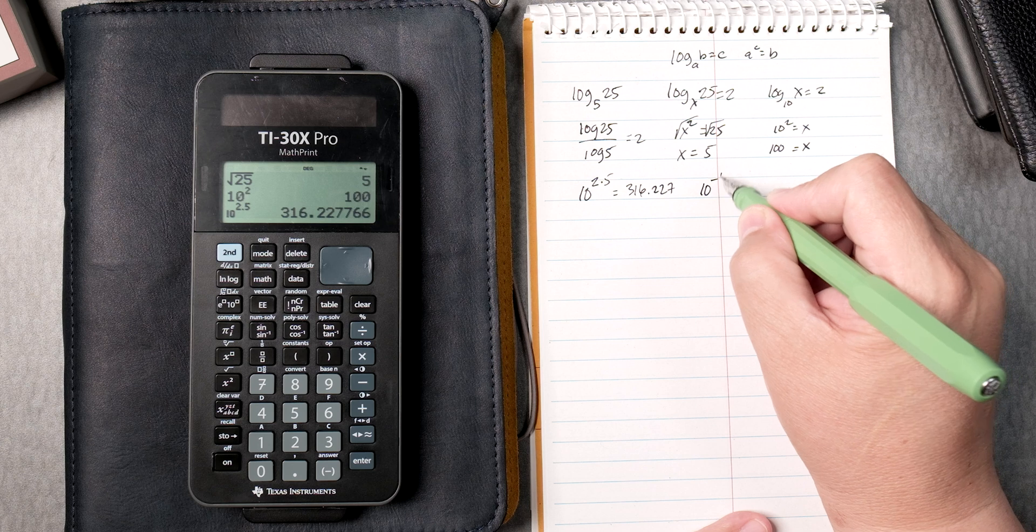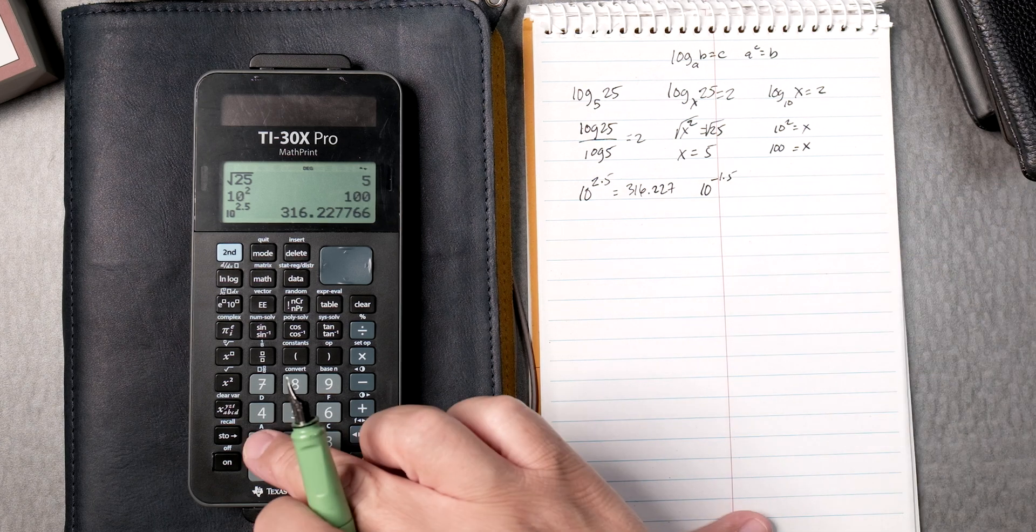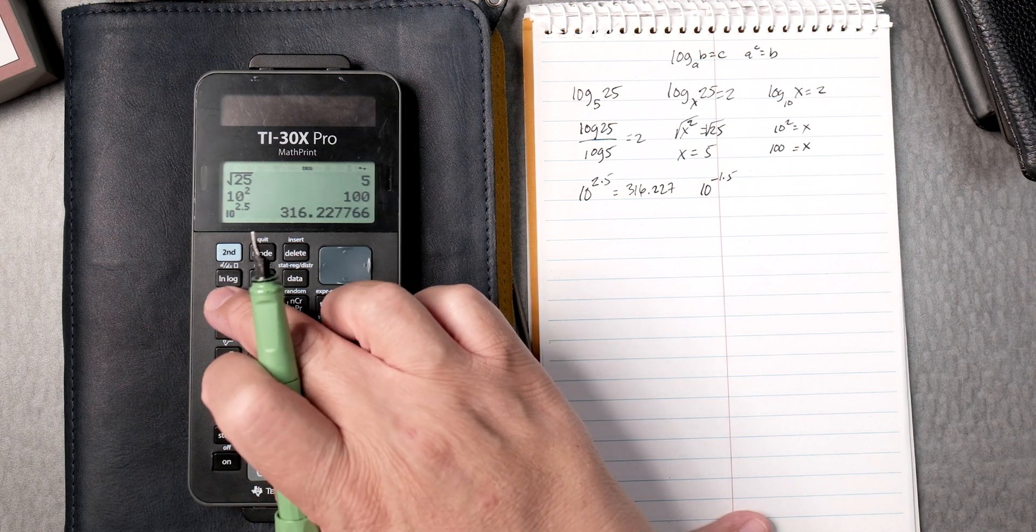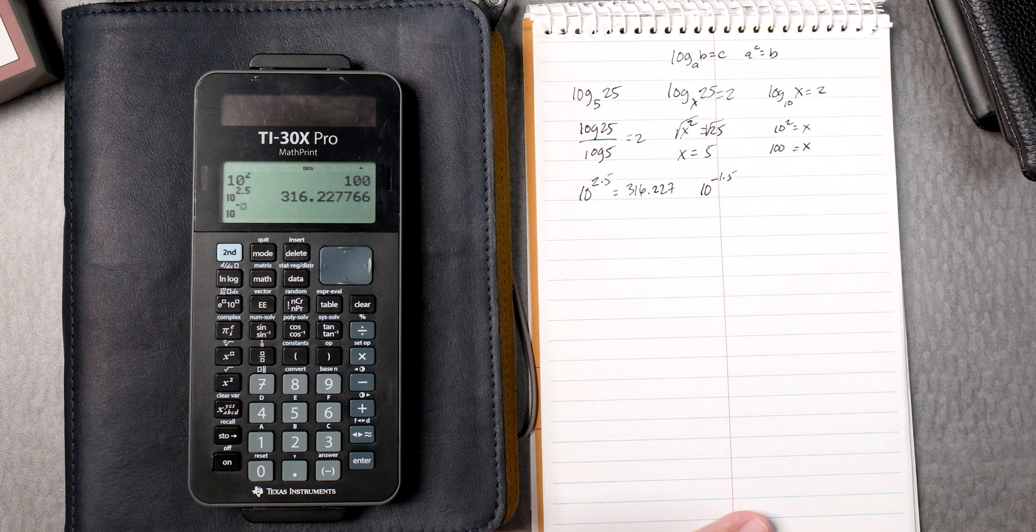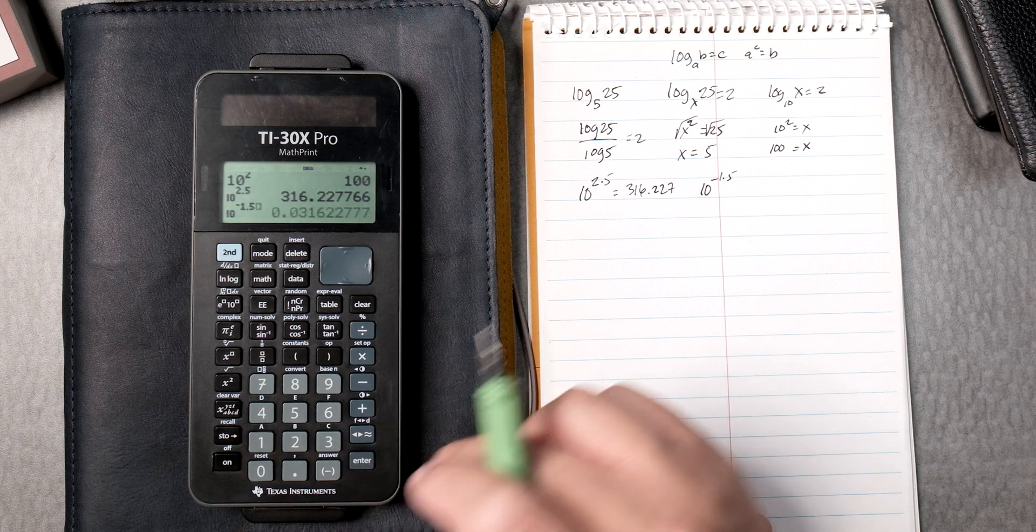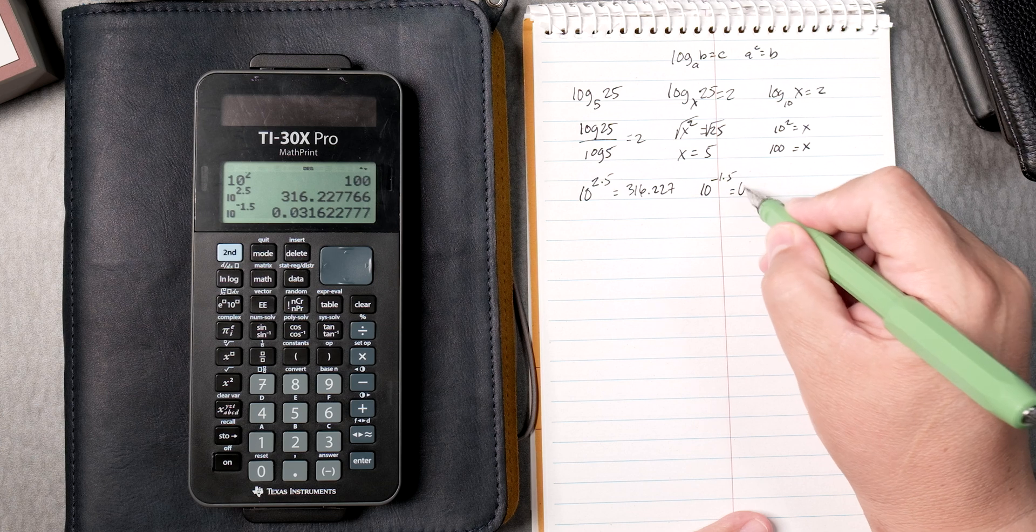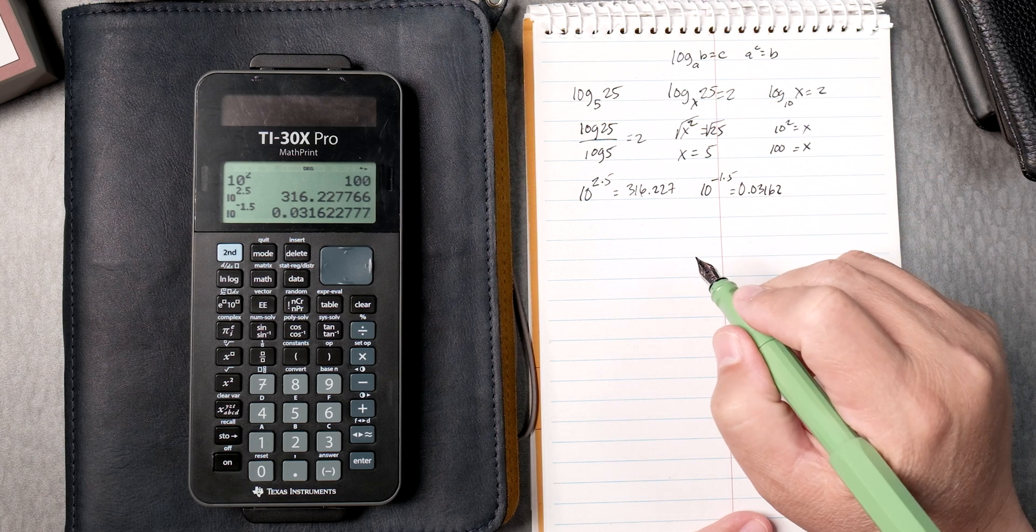Then 10 to the minus 1.5, same thing, right? You press this button twice, you put the negative, 1.5, you enter it, and it gives you 0.03162. Nice.